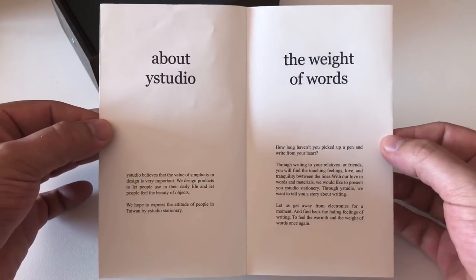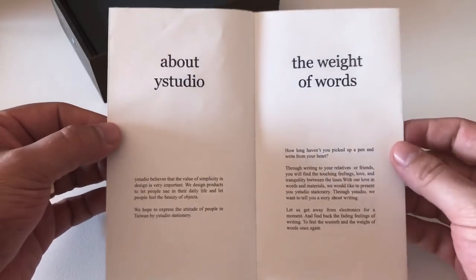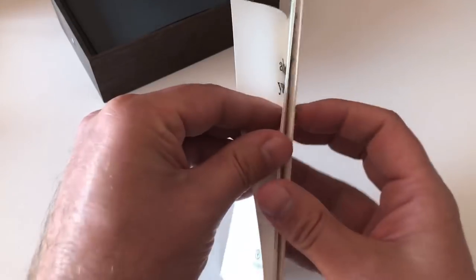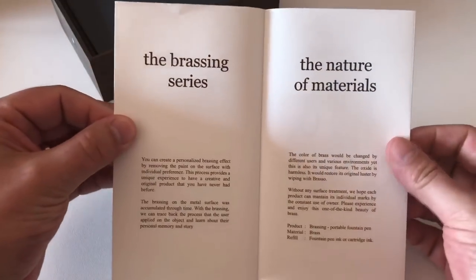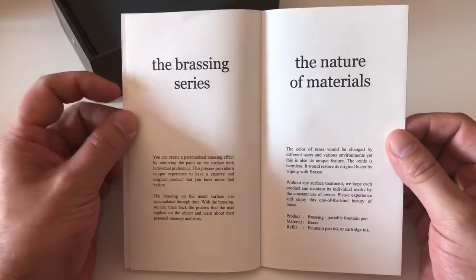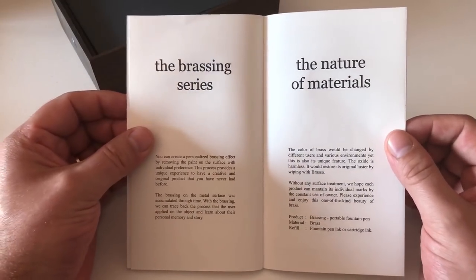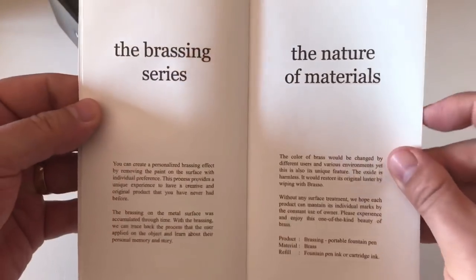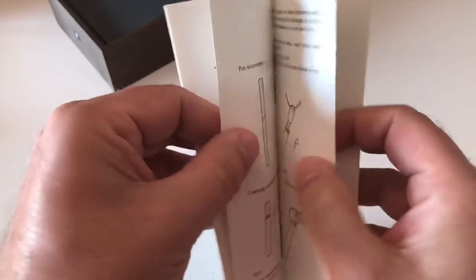This here is a little bit about the concept of going more analog. It then talks a little bit about the materials that it's made from—brass—and that you can manipulate that brass with a sanding paper provided with the pen.